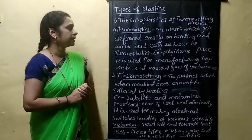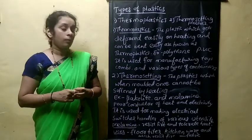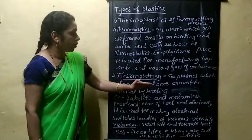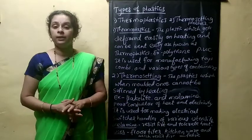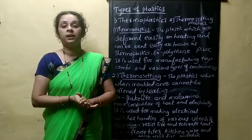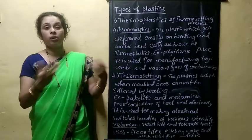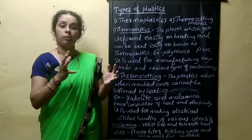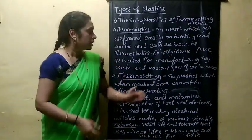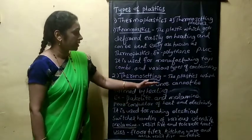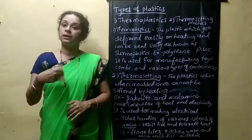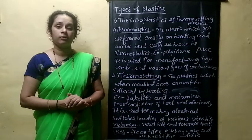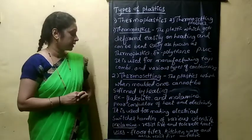The next type of plastic is thermosetting plastic. The plastics which, when molded once, cannot be softened by heating are called thermosetting plastics. They set on heating and you cannot get them back to their original form — you cannot change the shape of that plastic again once it has been molded.